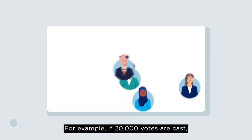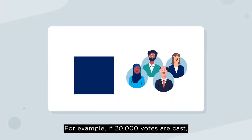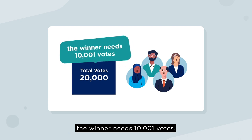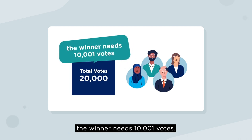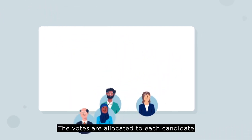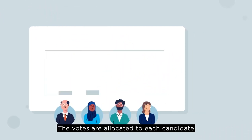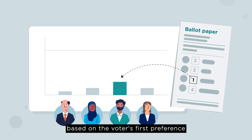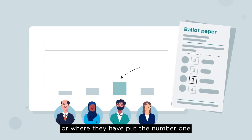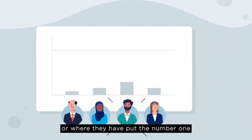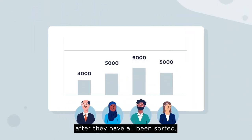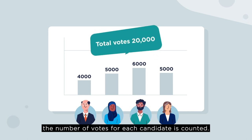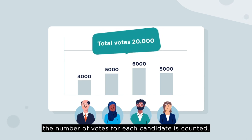For example, if 20,000 votes are cast, the winner needs 10,001 votes. The votes are allocated to each candidate based on the voter's first preference, or where they have put the number one. After they have all been sorted, the number of votes for each candidate is counted.